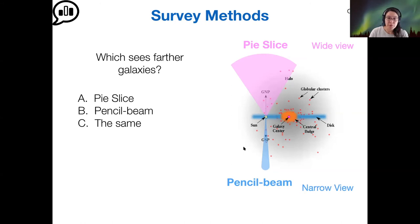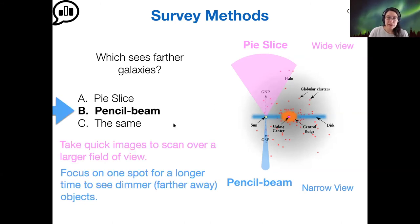I see a slight preference for pencil beam, and that's right. The big difference between these kinds of surveys is the amount of time that it takes to gather all the data. If you wanted to take a photograph of some mountain range, there's a couple different ways you can do it.